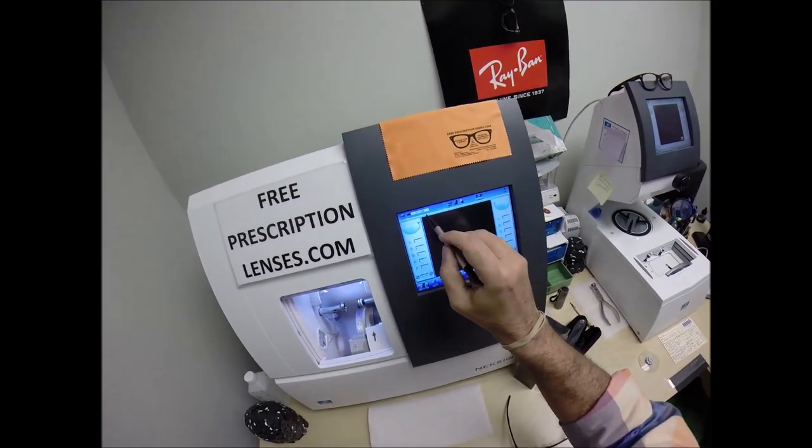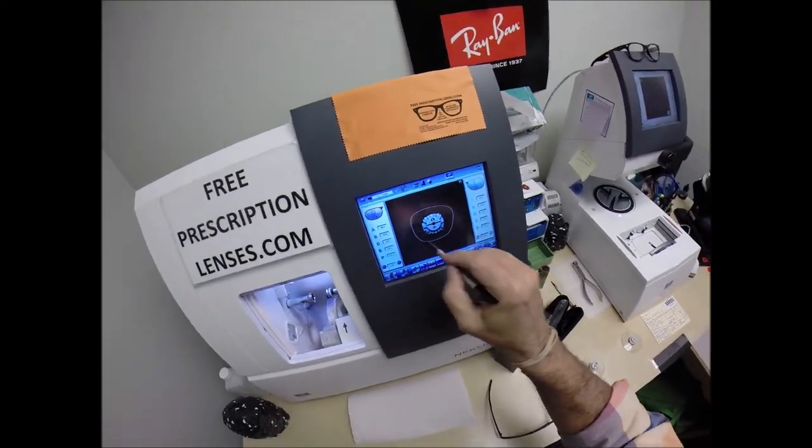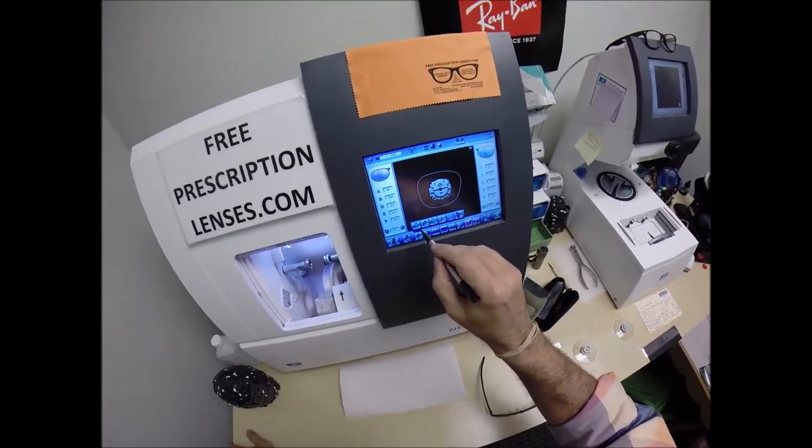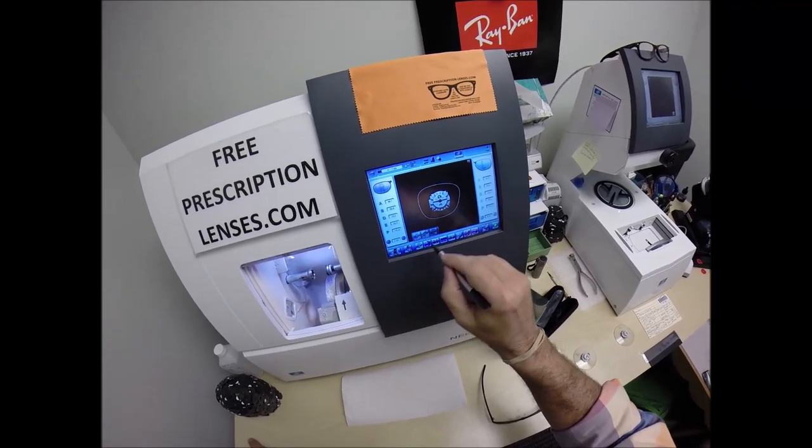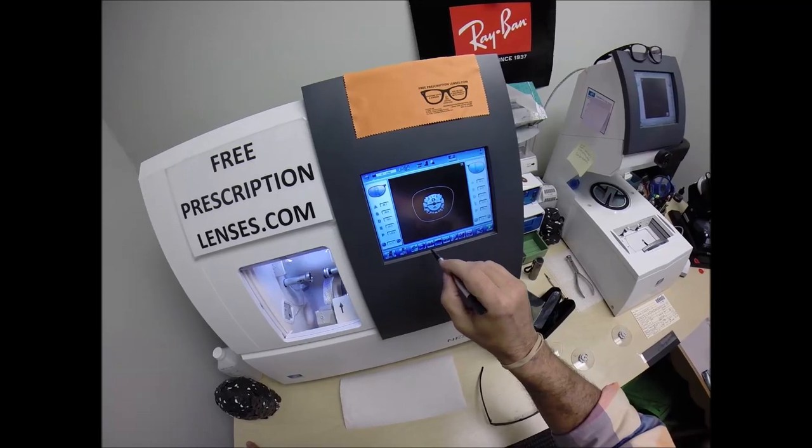Let's go ahead and wake up the computer. 1166, that's the shape that I'll be cutting. These are polycarbonate lenses. If they were plastic, high-index plastic, or Trivex, I would select that. But we're going to stick with polycarbonate.